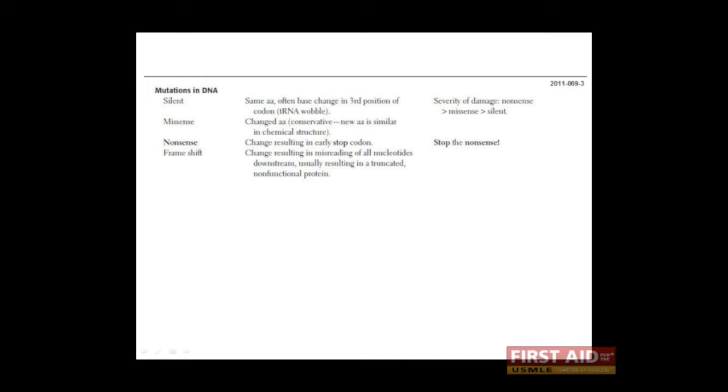Next, let's talk about the different kinds of mutations that can occur in DNA. The first is known as a silent mutation. This occurs when a nucleotide in the DNA changes, but results in no difference in the amino acid encoded.